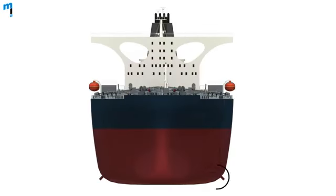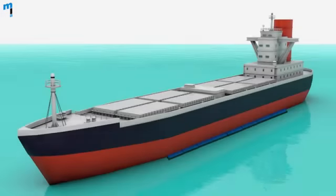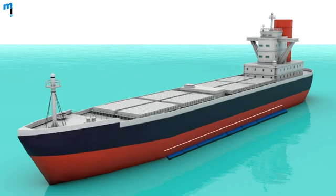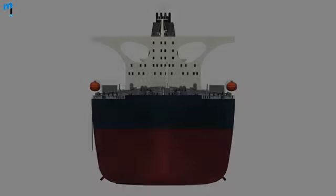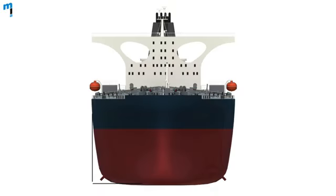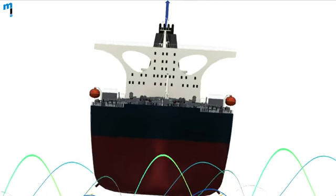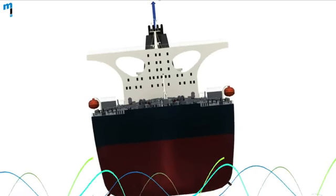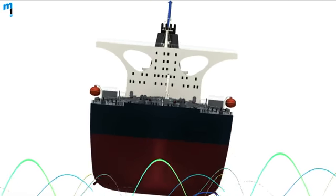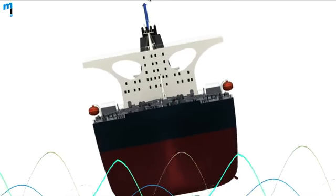Bilge keels are the most popular and fitted to the great majority of ships. They are plates projecting from the turn of the bilge, extending over the middle half to two-thirds of the ship's length. To avoid damage, they do not normally protrude beyond the ship's side or keel lines, but they need to penetrate the boundary layer around the hull. They cause a body of water to move with the ship and create turbulence, thus dampening the motion and causing an increase in period and reduction in amplitude.